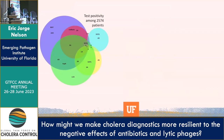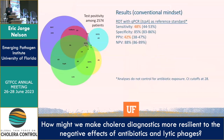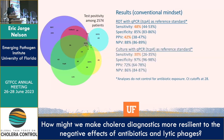Taking a traditional mindset to assessing diagnostics, we tend to put the RDT against a gold standard such as qPCR for the gene TCPA. The sensitivity, specificity, positive predictive value, and negative predictive value were 48%, 85%, 42%, and 88%. For culture, the same numbers are 30%, 97%, 72%, and 86%. These numbers are not dissimilar from our 2015 study.